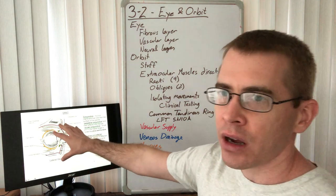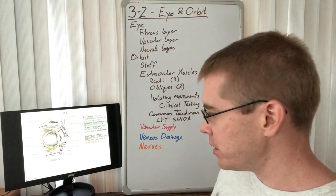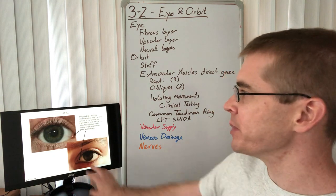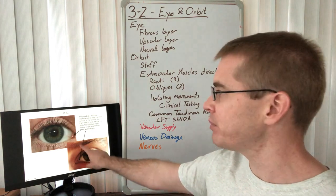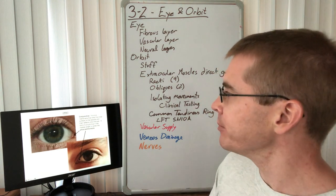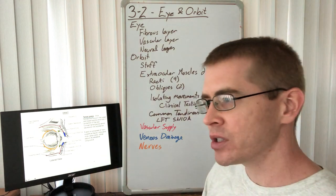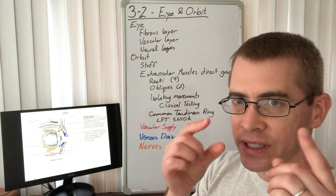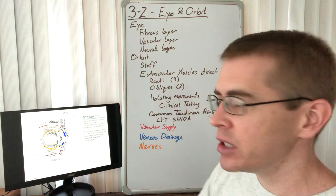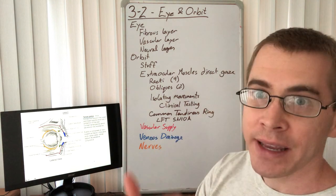The conjunctival fornices prevent objects from traveling deep around the eye and limit exposure to the external environment. If something gets into the mucosa of the eye it causes inflammation — you can see redness in both the sclera and the plica semilunaris and conjunctiva around the eye. That is the pink eye process.